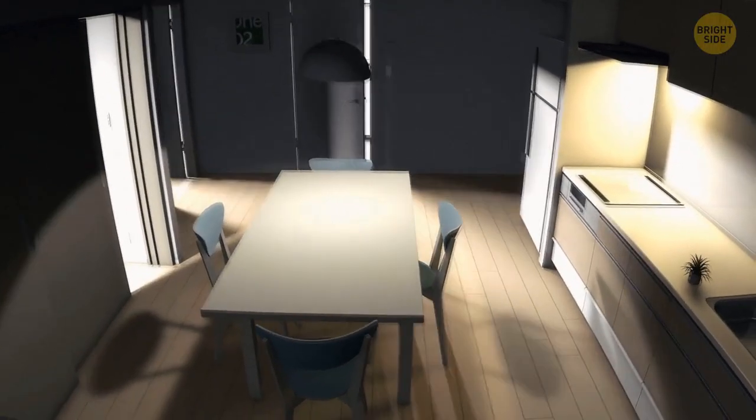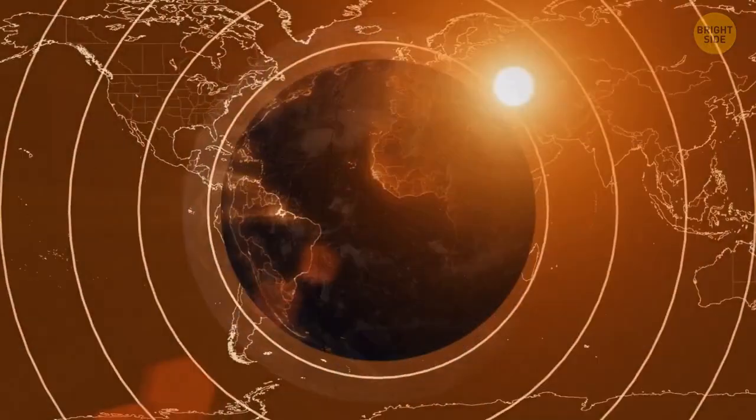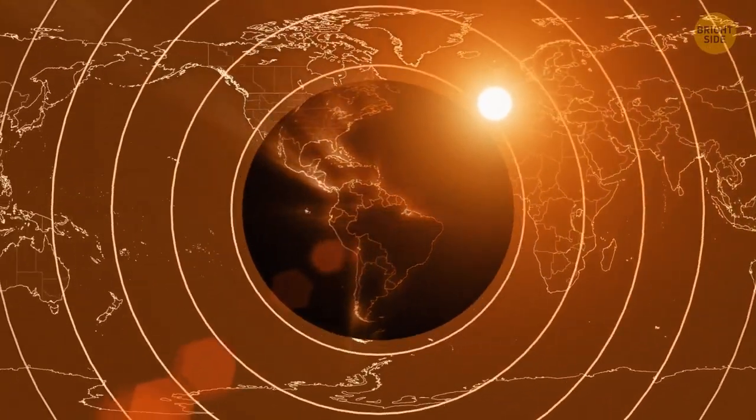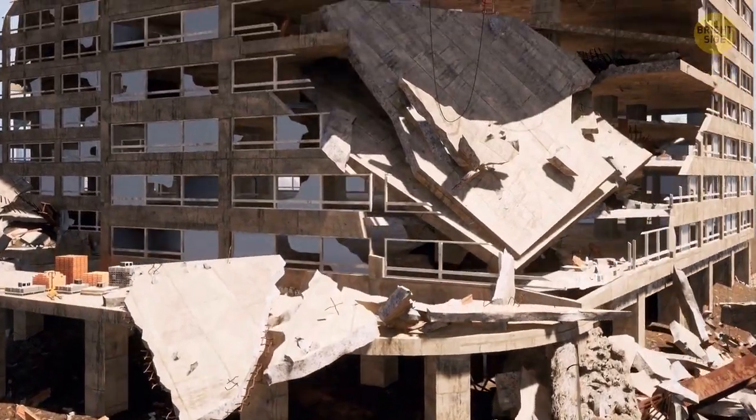Around half a million earthquakes happen on Earth every year, but many of them occur very deep in the Earth's crust and only special equipment can detect them. We feel around 20% of earthquakes and only 100 of them can cause damage.